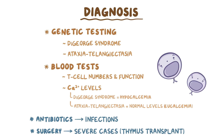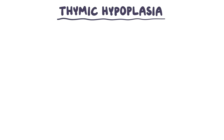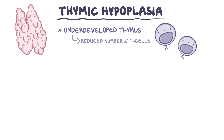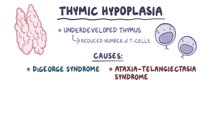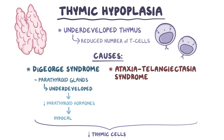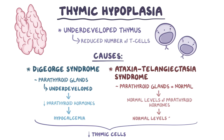As a quick recap, thymic hypoplasia is a condition where the thymus is underdeveloped, leading to a reduced number of T cells. There are two main causes: DeGeorge syndrome and ataxia telangiectasia syndrome, both of which cause a reduction of thymic cells. In DeGeorge syndrome, the parathyroid glands are underdeveloped as well, resulting in less parathyroid hormone and hypocalcemia. In ataxia telangiectasia syndrome, the parathyroid glands develop normally, resulting in normal levels of parathyroid hormone and normal calcium levels in the blood.